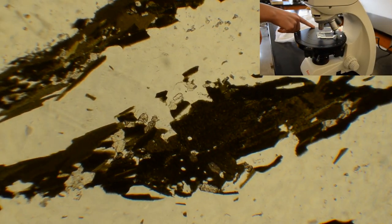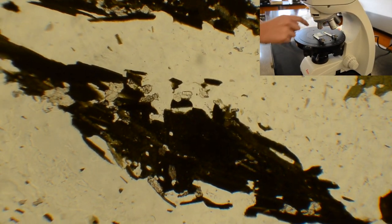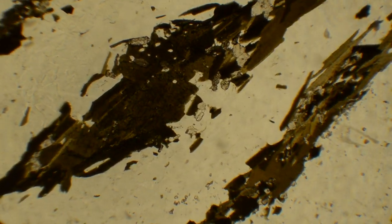Notice that some minerals, like this brown one in the center of my view, change its color when I rotate the stage. This property is known as pleochroism, and is specific to certain minerals.